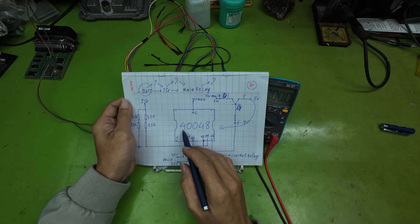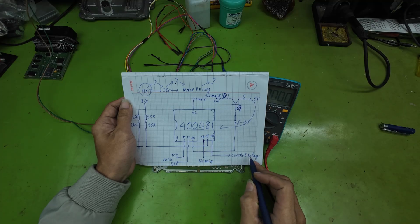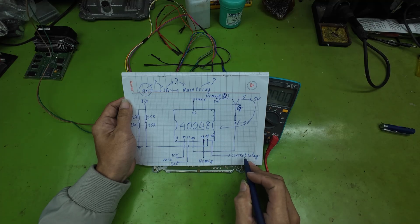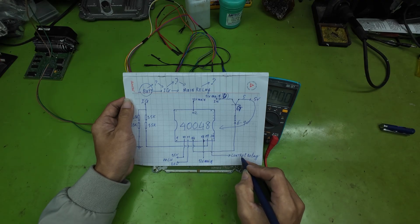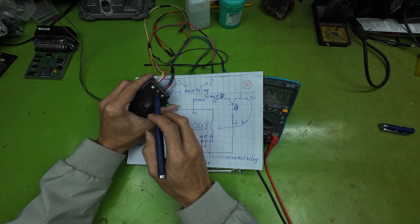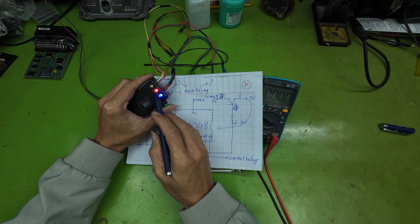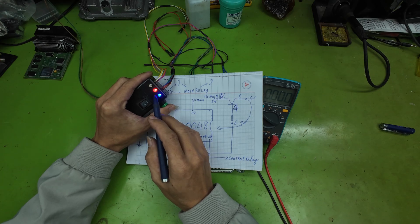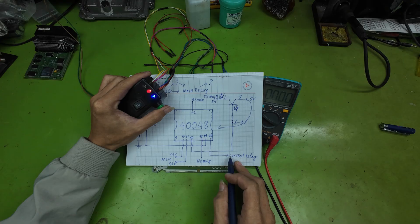When IG power is applied, it goes into IC40048 at pin 19. The IC begins to operate and issues a control output at pin 20 to close the main relay. When I flip the switch, the main relay closes, confirming that IC40048 has received IG and has commanded the relay to close.